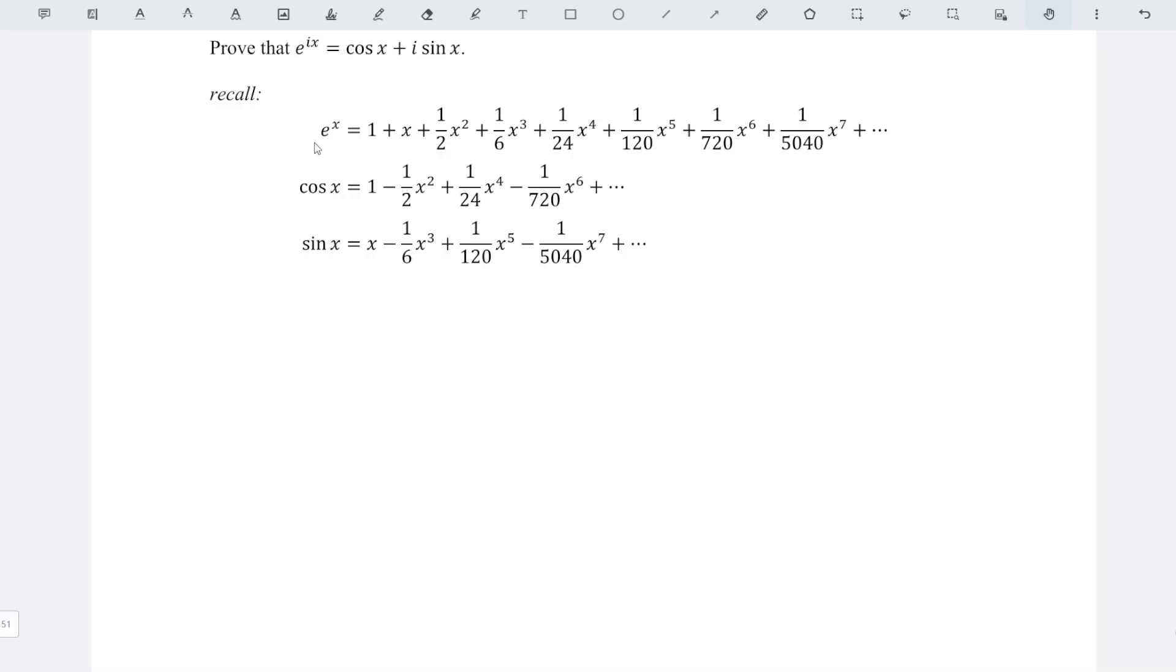Recall the Maclaurin series of e to the power of x. If we replace x using ix, we should obtain the equation e to the power of ix is equal to 1 plus ix plus 1 over 2 ix squared and so on.